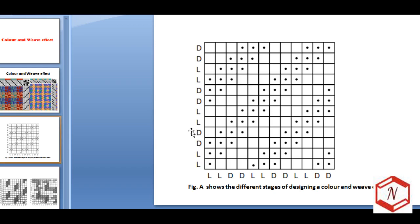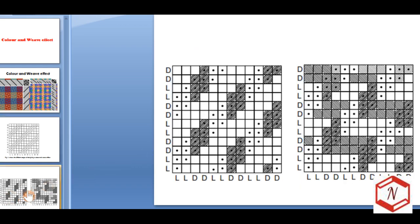An irregular arrangement could be three dark, one light, and so on. In our figure, in the warp direction we use two light, two dark, two light, two dark; and in the weft direction we use two light, two dark — meaning light, light, dark, dark, light, light, dark, dark.